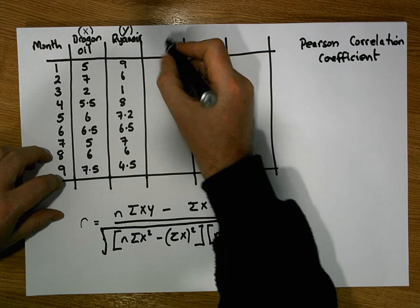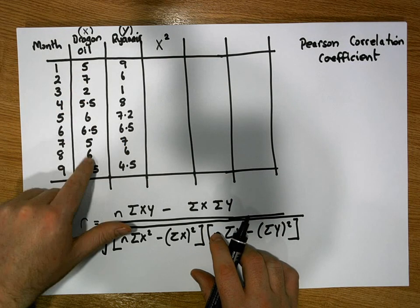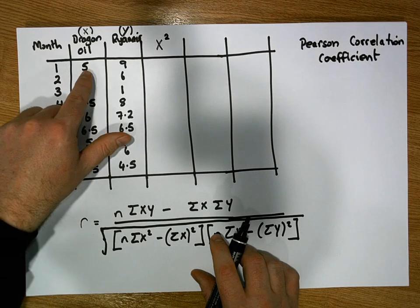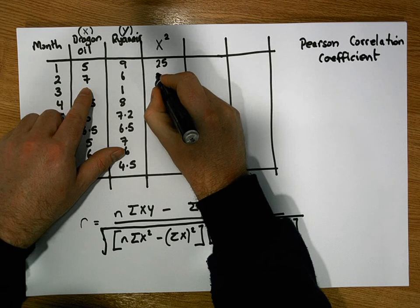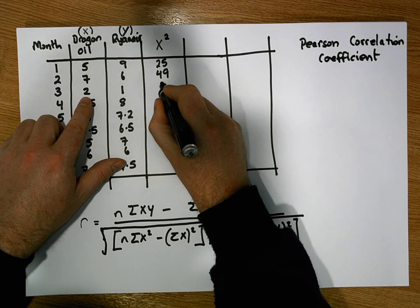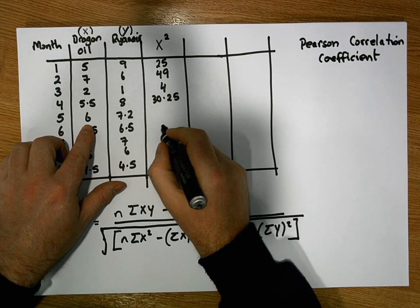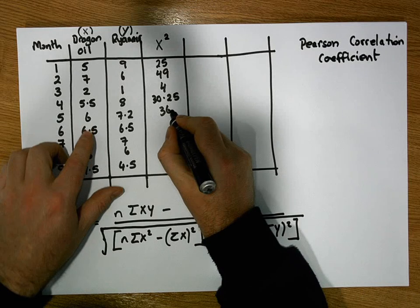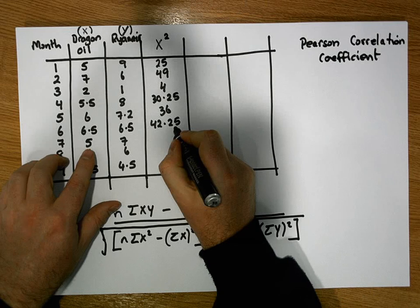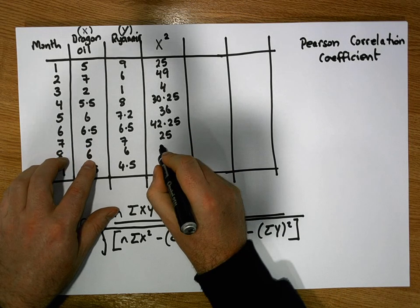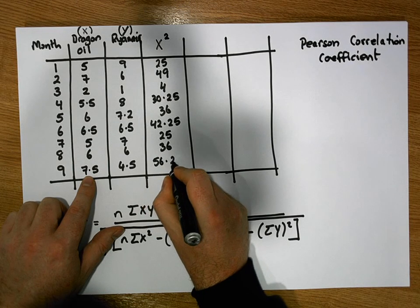We need to create an x squared column — the square of each independent variable value. When x is 5, x² is 25. When x is 7, x² is 49. When x is 2, x² is 4. When x is 5.5, x² is 30.25. When x is 6, x² is 36. When x is 6.5, x² is 42.25. When x is 5, x² is 25. When x is 6, x² is 36. When x is 7.5, x² is 56.25. So we've constructed our x squared column.